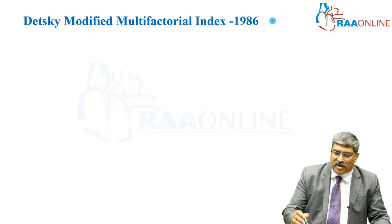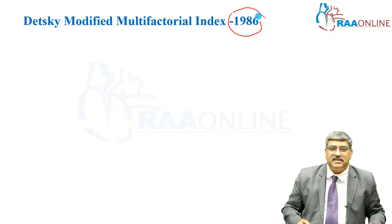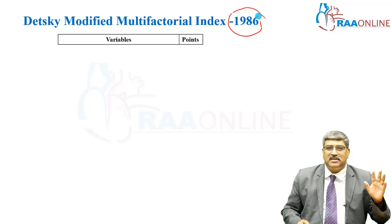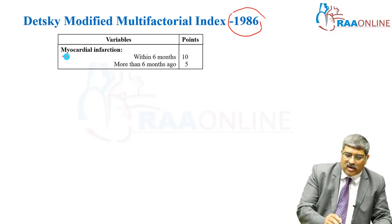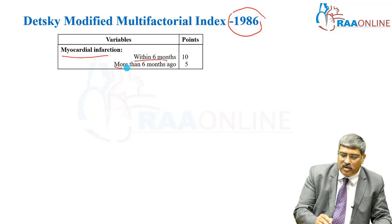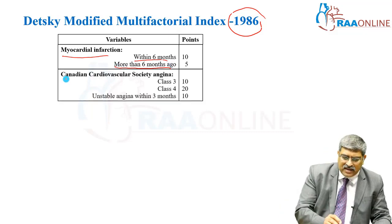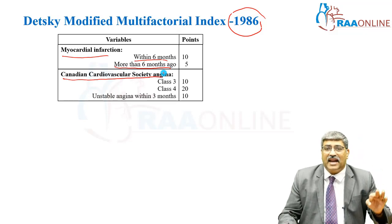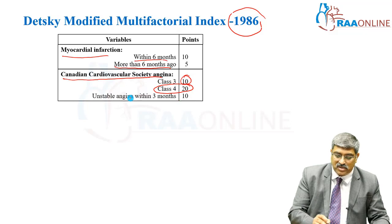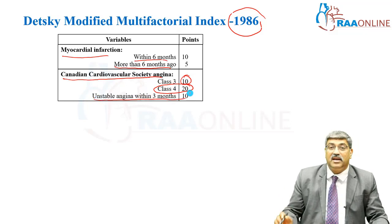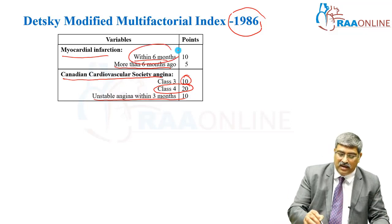The next scoring system, introduced 9 years after Goldman, was Detsky's Modified Multifactorial Index. He looked at 10 variables and assessed points similar to Goldman. Myocardial infarction within 6 months is given 10 points; if it is over 6 months, it is 5 points. Canadian Cardiovascular Society angina Class 3 is 10 points, Class 4 is 20 points, and unstable angina is 10 points, similar to myocardial infarction.